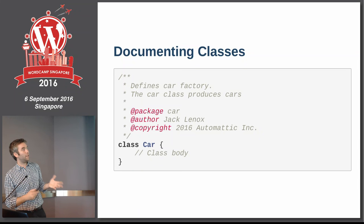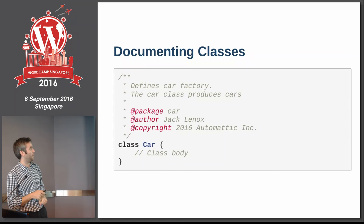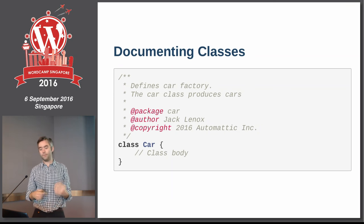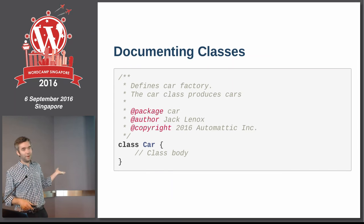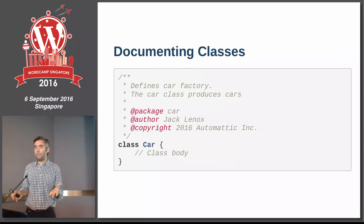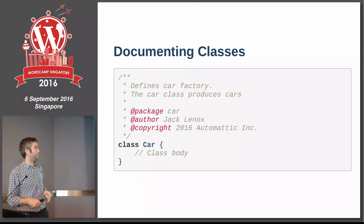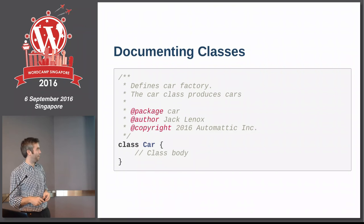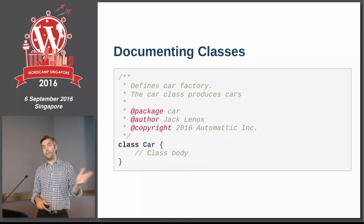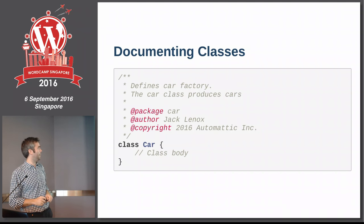PHP Documentor expects a short description first, ending in a full stop, then a longer description. For a class, we say 'Defines car factory.' Then a longer description: 'The Car class produces cars.' You can add optional flags — package (the plugin slug if it's a plugin), author, copyright, and license. If you're working with WordPress, that license should be the GNU version 2 license.